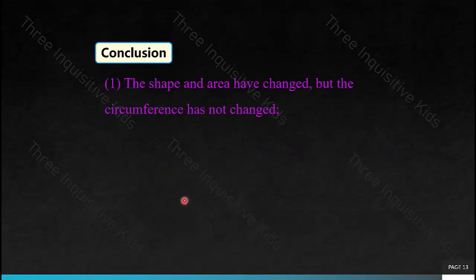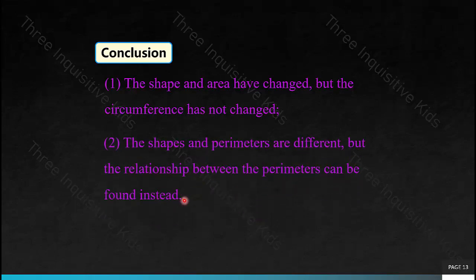Conclusion: there are two scenarios that can occur. The first: the shape and area have changed, but the circumference has not changed — meaning the same perimeter can enclose a different area. The second scenario: the shapes and perimeters are different, but a relationship between the perimeters can still be found. Even though the two shapes and their perimeters are different, there can still be a relationship between the perimeters.